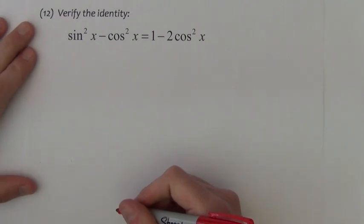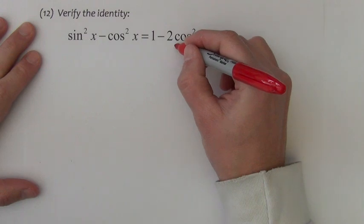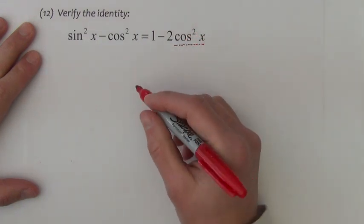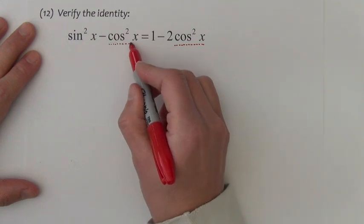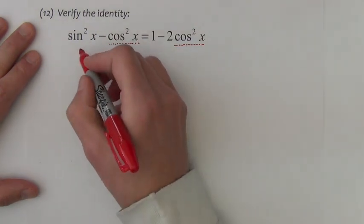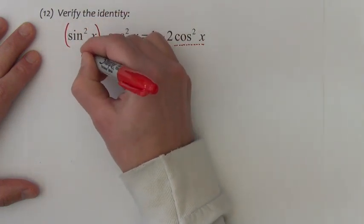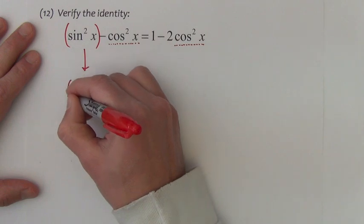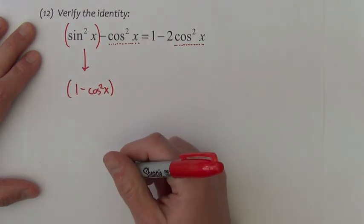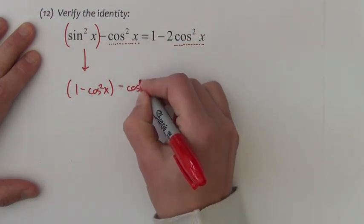Last problem has more use of the Pythagorean identity. This is an example of one where if you look at the right side, what you're trying to prove has a cosine squared in it. So I probably don't want to do anything to the cosine squared because I want that in the answer. Instead, there's no sine squared in the answer. So let's replace sine squared with its Pythagorean equivalent, one minus cosine squared.